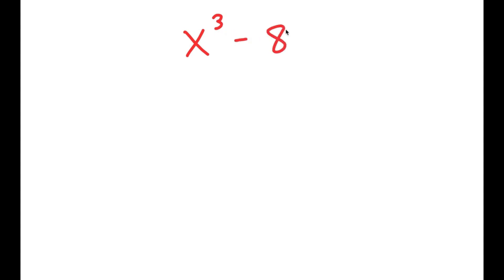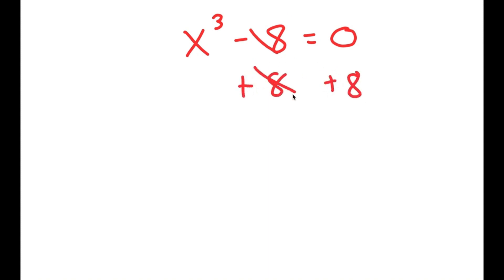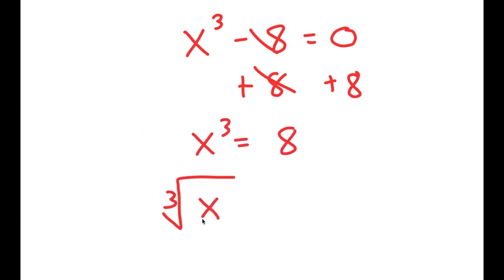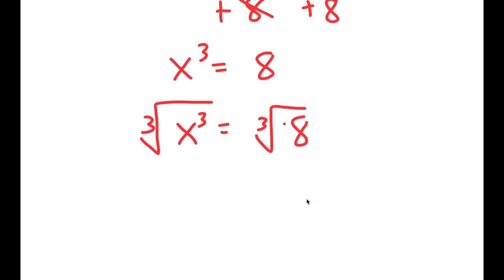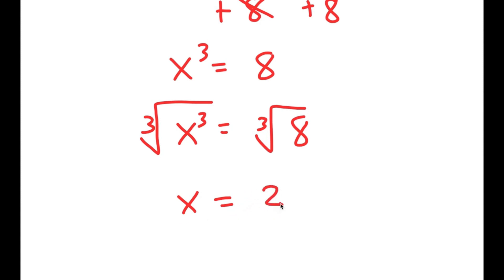In this video, I'm going to solve the equation x to the power of 3 minus 8 is equal to 0. So how most people solve this equation is they add 8 on both sides, so they get x to the power of 3 is equal to 8. And then they take the cube root on both sides — the cube root of x to the power of 3 is x, and the cube root of 8 is 2. So they get x equals 2, which is a solution to this equation.